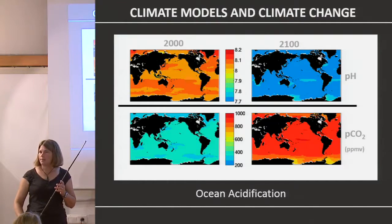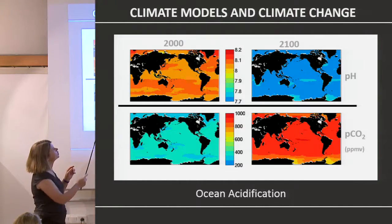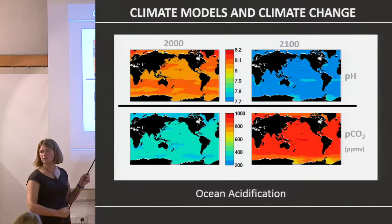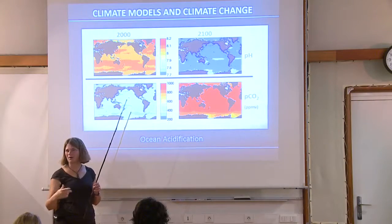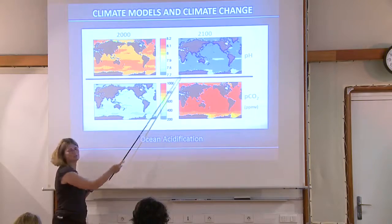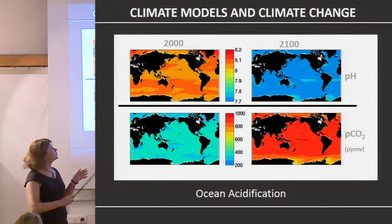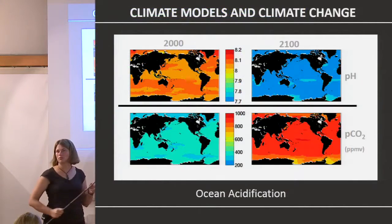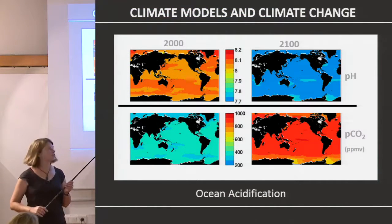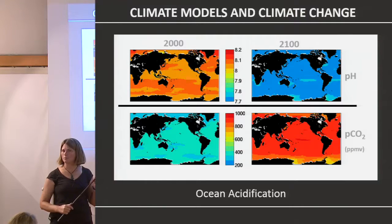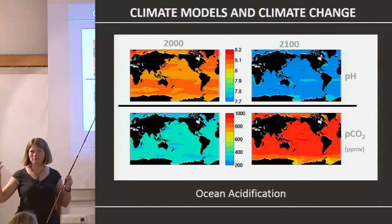Some of the most striking biogeochemical changes: showing pH and pCO2 in the surface layer — this is year 2000 and this is year 2100. It should be on a different colour bar because it's extraordinary. We're going from this world to this world. In the open ocean, there's no place with that level of pCO2 now, though polar regions do, so we have some ideas of what a high-CO2 world looks like.